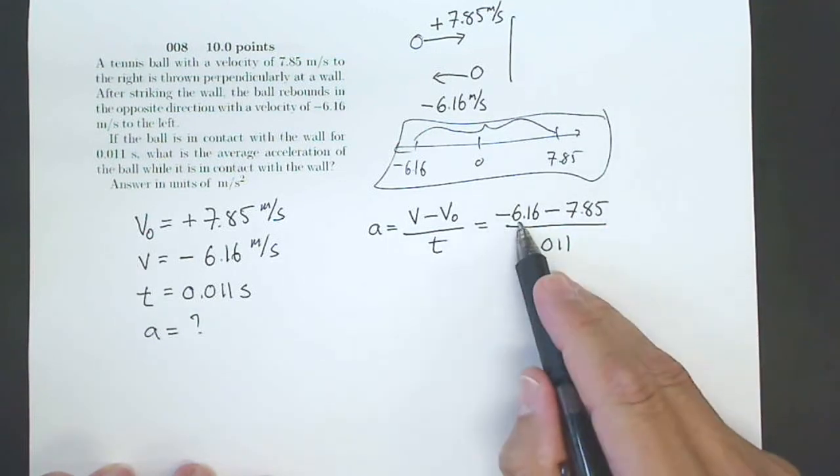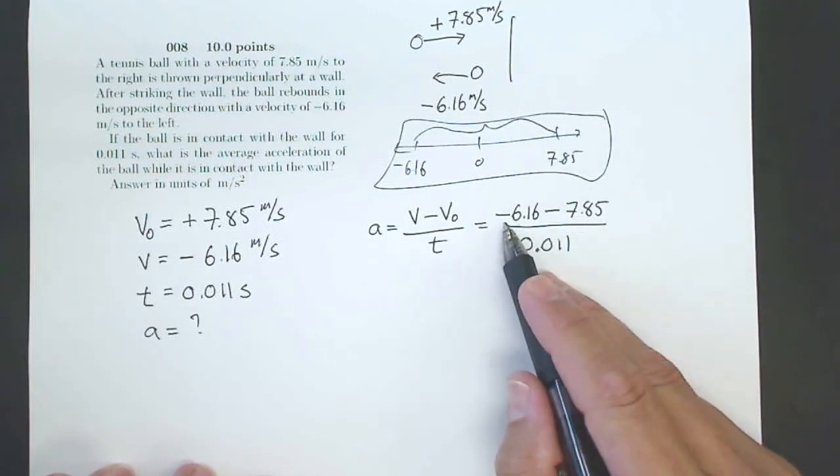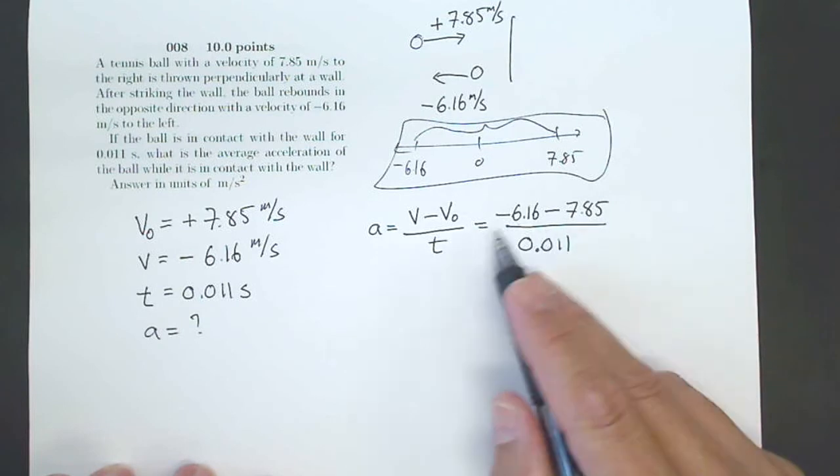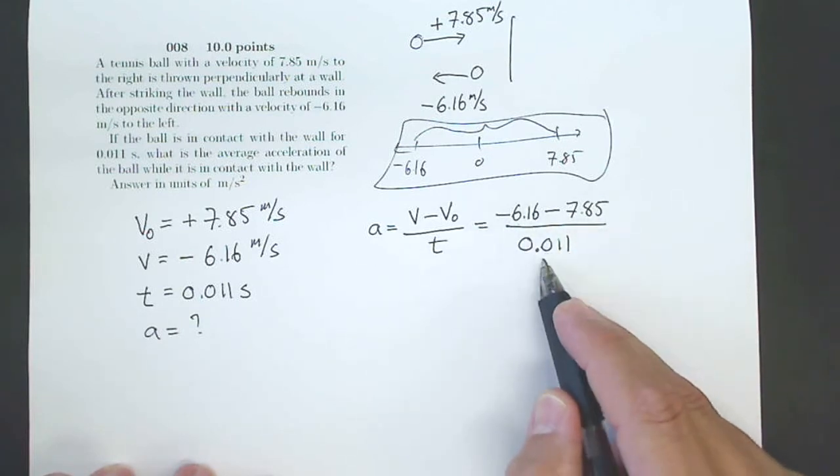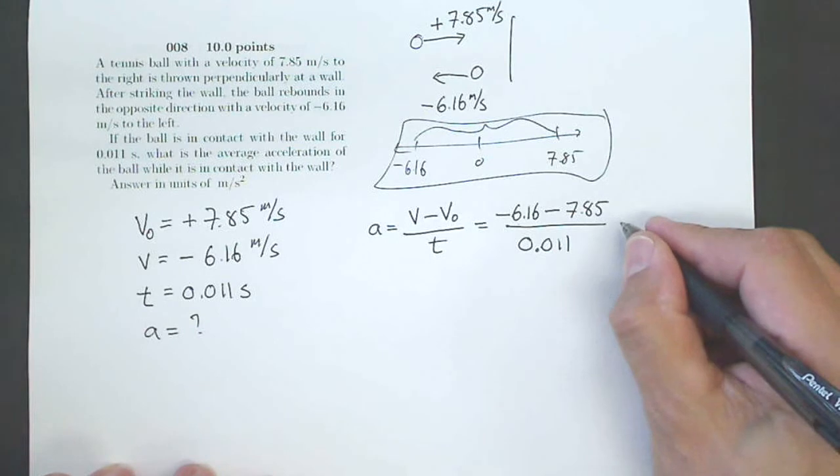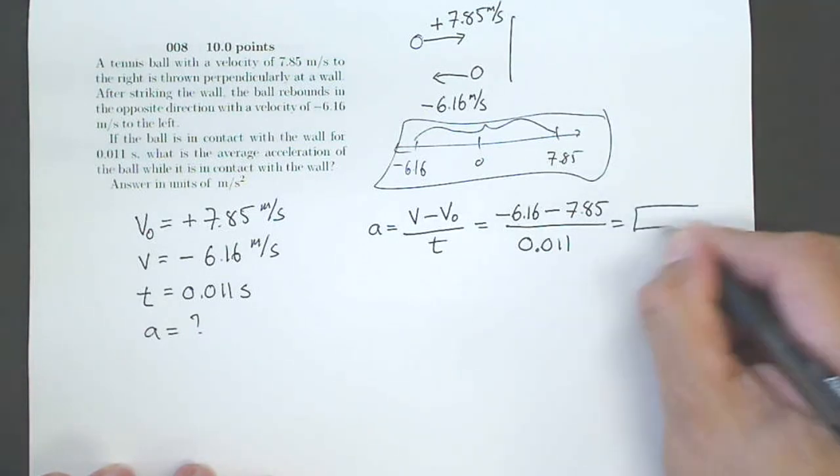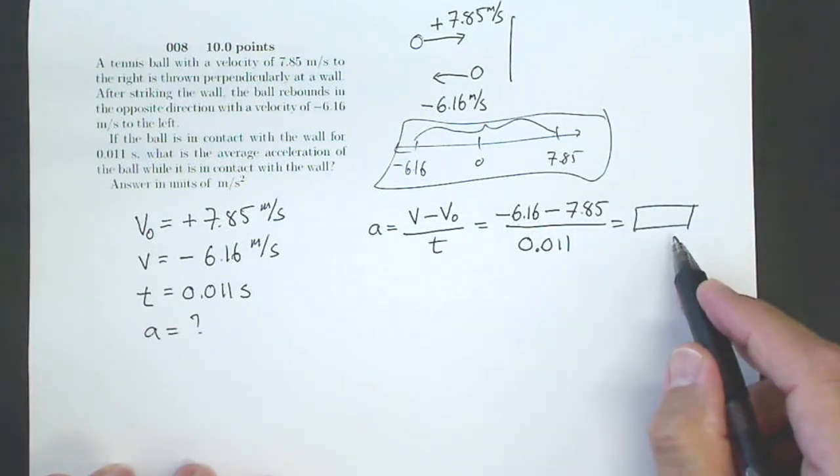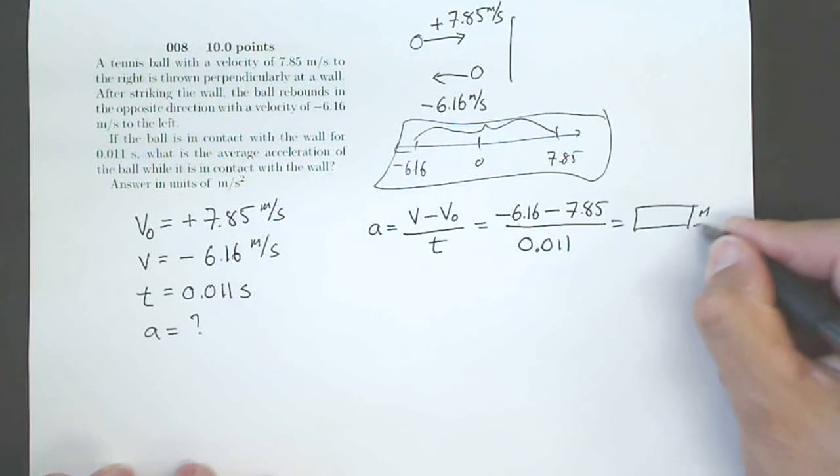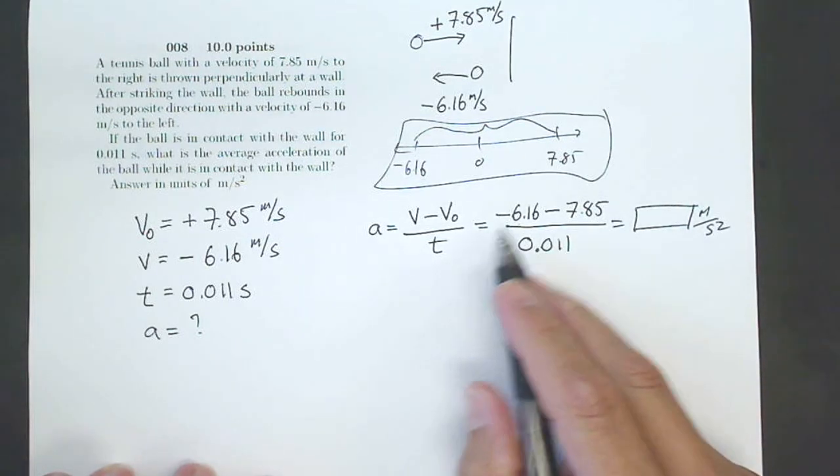Now, see, negative 6 minus another 7, I'm going to get negative 13, negative 14 point something, right? So that's going to be a negative number. That's going to be something, and when you divide it, you're going to get some big negative number here, some huge negative number, and your units are going to be meters per second squared.